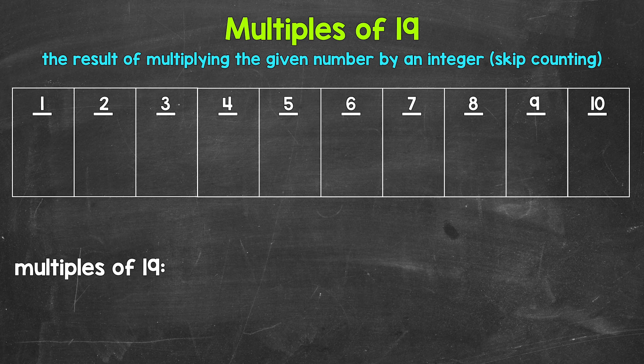So taking a look at the multiples of 19, let's start with one times 19. That gives us 19. 19 is the first multiple of 19.